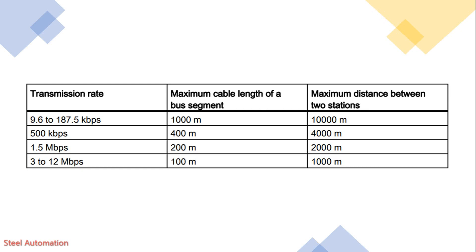For a transmission rate of 500 kbps, the maximum cable length of a bus segment is up to 400 meters, whereas the maximum distance between two stations using an RS-485 repeater is up to 4000 meters. For a transmission rate of 1.5 Mbps, the maximum cable length of a bus segment is up to 200 meters, and the maximum distance using an RS-485 repeater is up to 2000 meters.